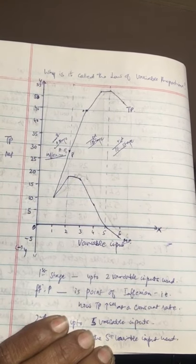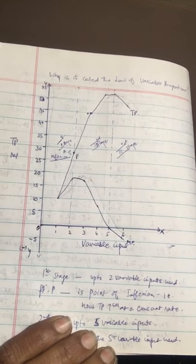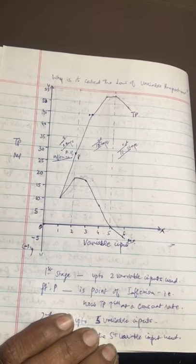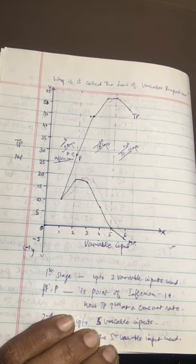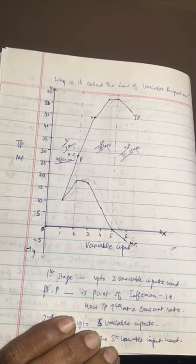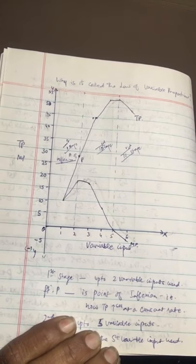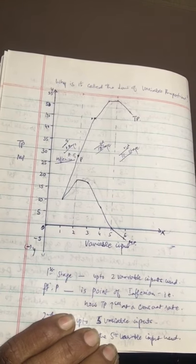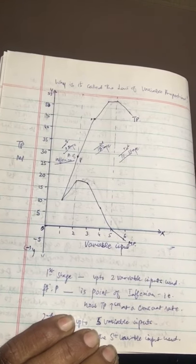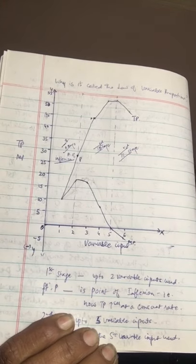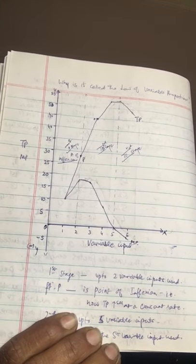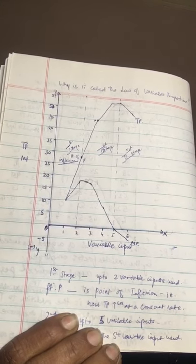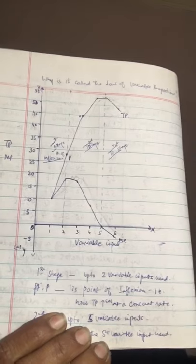The marginal product tells you about the rate at which total product increases. There are three stages or phases: when total product increases at an increasing rate, marginal product is at its height; when marginal product starts falling but is still positive, total product increases at a decreasing rate; and finally when total product falls, marginal product is negative.